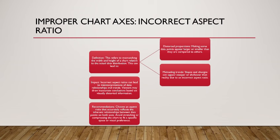Impact: incorrect aspect ratios can lead to misinterpretations of data relationships and trends. Viewers may draw inaccurate conclusions based on visually distorted information. Recommendations: choose an aspect ratio that accurately reflects the inherent relationships between points on both axes. Avoid stretching or compressing the chart to fit a specific space or visual preference.